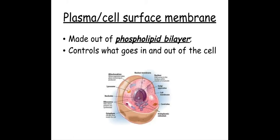We also have the plasma membrane, or cell surface membrane — it's really important you call it the plasma membrane or cell surface membrane, not just 'the membrane', because you won't get the mark. It is made out of a phospholipid bilayer and it determines what goes in and out of the cell.